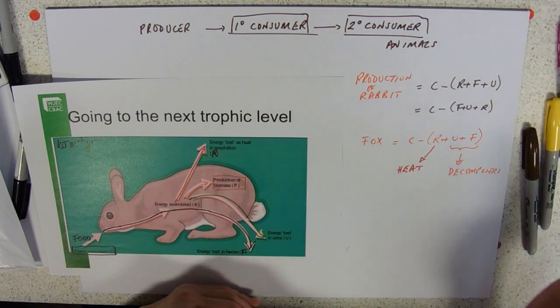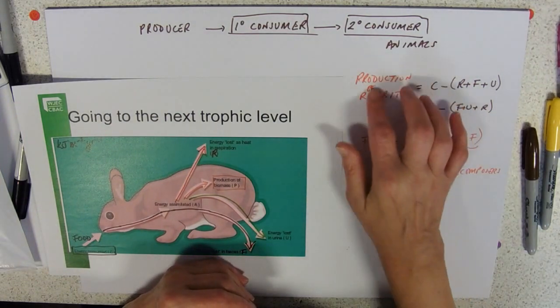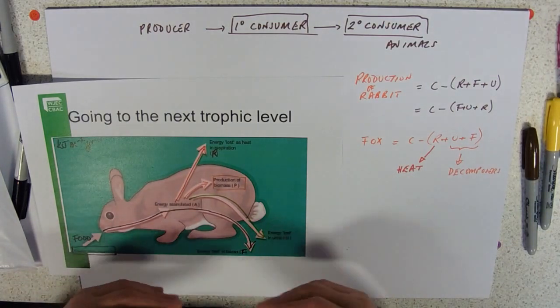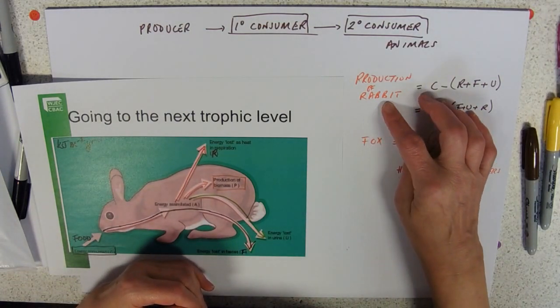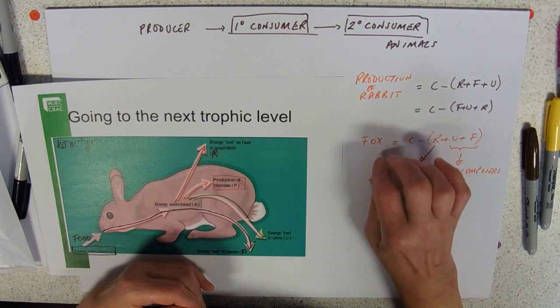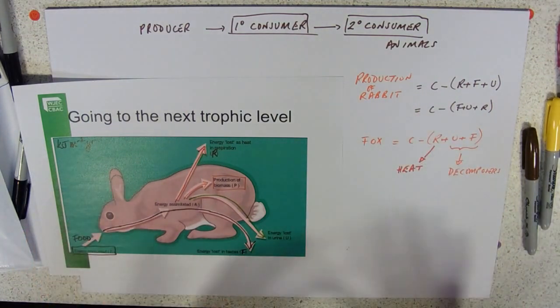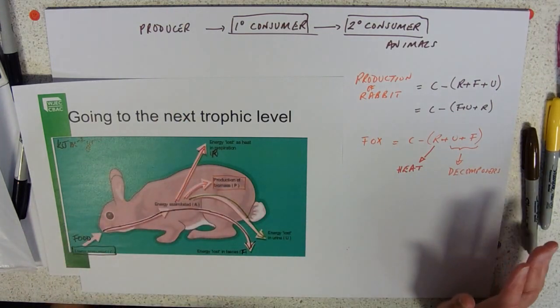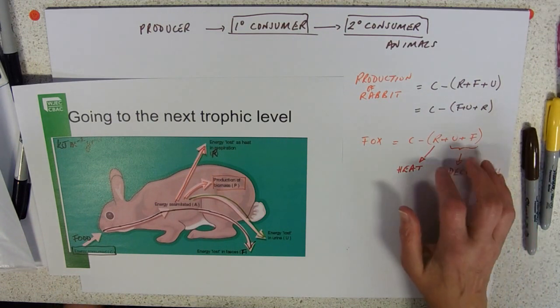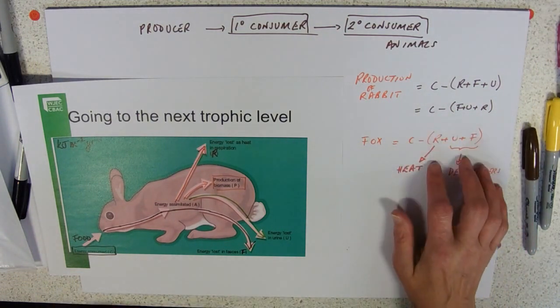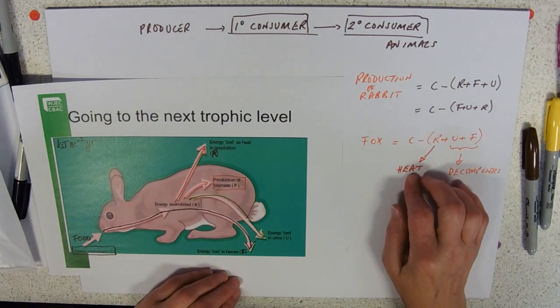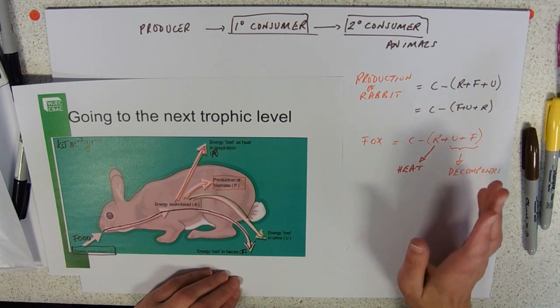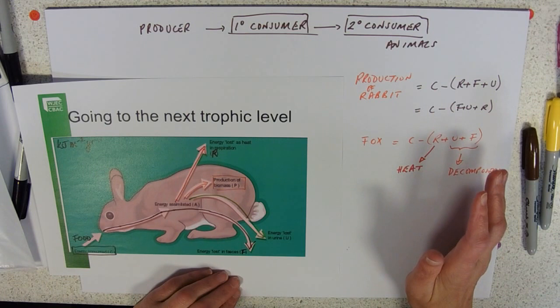That would cut down the losses which would mean you get more production. Production is what's available to the next level. If you're rearing rabbits or sheep or cows, the next level up is humans. The other is the level of productivity between different food chains. Something that doesn't use a lot of its food to respire just to provide heat, so anything in an aquatic food chain, all the invertebrates, reptiles, they're all a little bit more efficient.